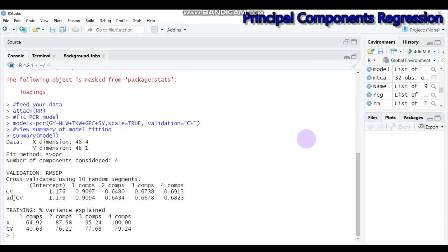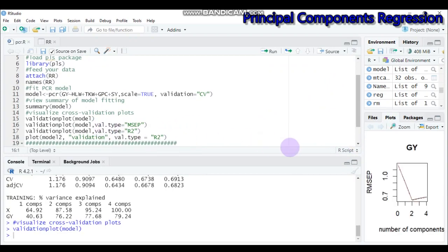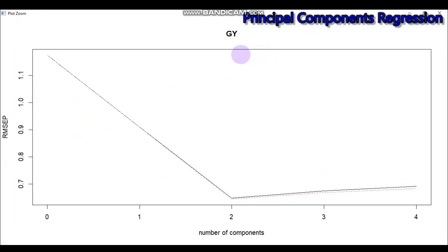If you want to visualize this further, use the validation plot. It shows the response variable; the lowest RMSEP is around two principal components. From the third and fourth components, the error tends to increase. So selecting two principal components is enough based on our result.